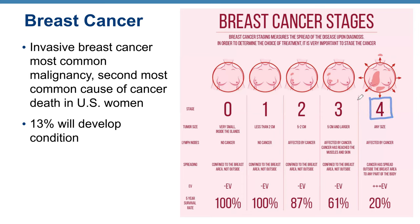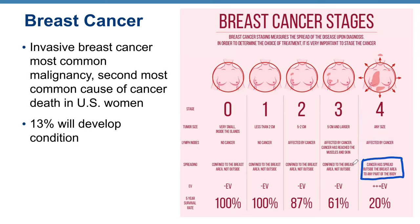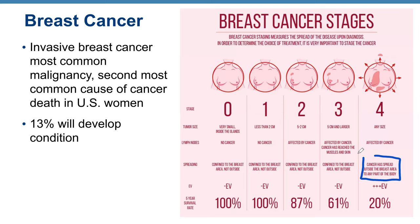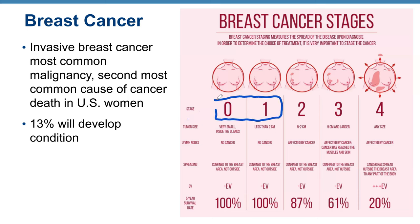Stage 4: tumor size is not the primary measurement; lymph nodes are affected and cancer has spread outside the breast to any part of the body — this is metastasis. Cancer often spreads to pelvic bones. EV markers are elevated. Only 20% five-year survival rate. This underscores the extreme importance of early diagnosis before the cancer spreads.